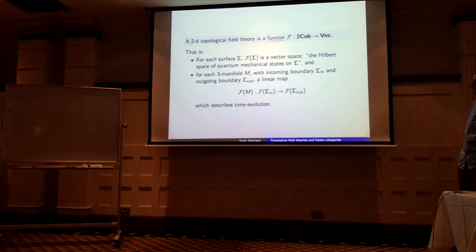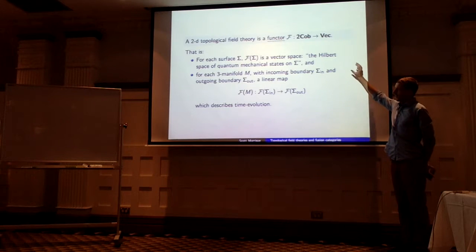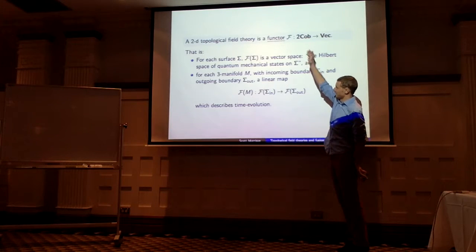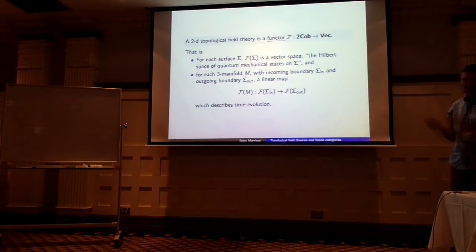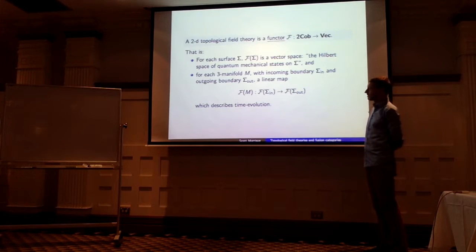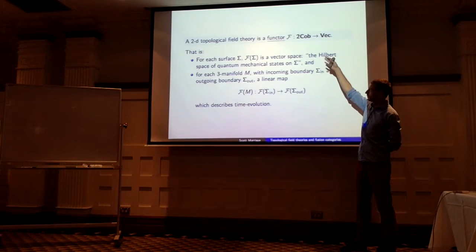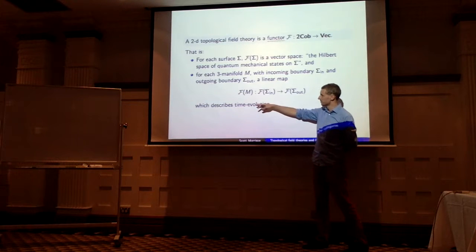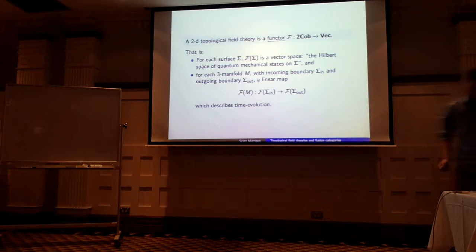So let's start right back at the beginning: what is a 2D topological field theory? It's a functor from 2-Cob to Vect. What that means is that for every surface Σ, the functor F gives F(Σ), some vector space — you're meant to think of that as the Hilbert space of quantum mechanical states on a system of the shape of that surface. And then for every 3-manifold M with boundary having incoming and outgoing pieces, the morphism part of the functor gives you a linear map F(M) from the vector space of the incoming boundary to the vector space of the outgoing boundary.